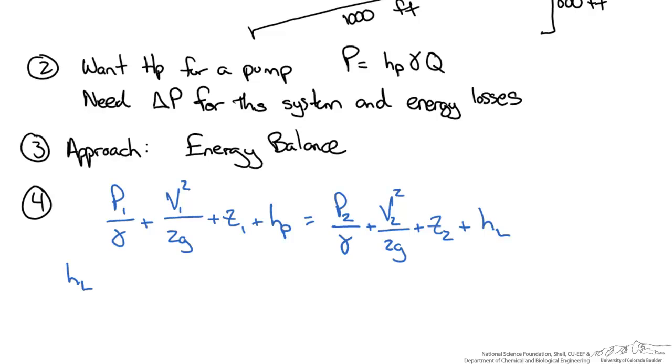We need to figure out what the head loss is. Head loss is written as related to a frictional factor times the length of the system over the diameter, multiplied by a kinetic component. We can calculate velocity based on volumetric flow rate and pipe diameter. We're given the length and pipe diameter, so all we need is the frictional factor.